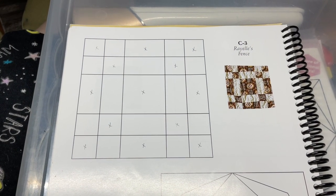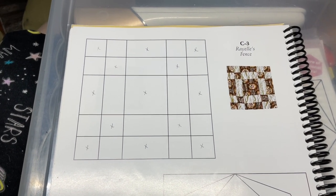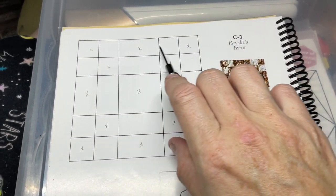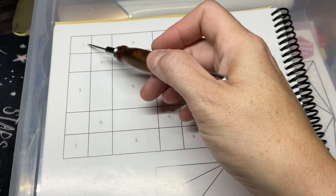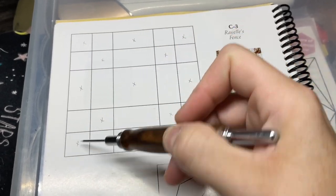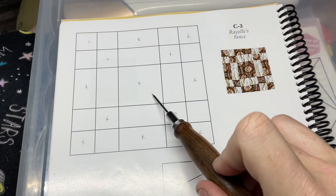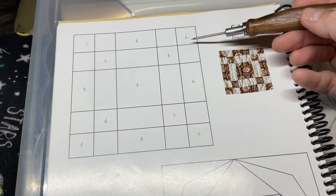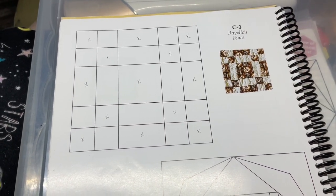Now we're assembling the C3 block. C3 is very straightforward - it's got all squares and rectangles, so we're just going to assemble this into rows. I've marked the focus fabric pieces with X's because it was easier for me to see that way. Basically, I'm going to assemble each row and then put the rows together.